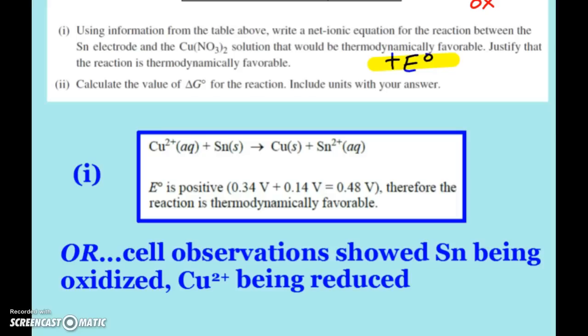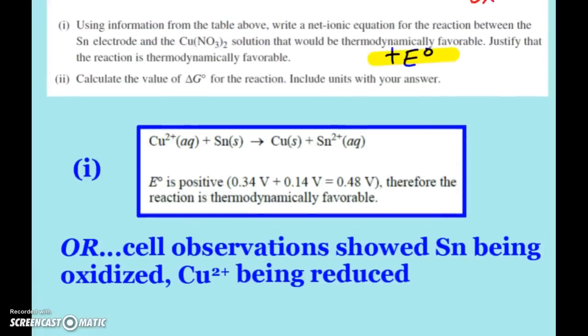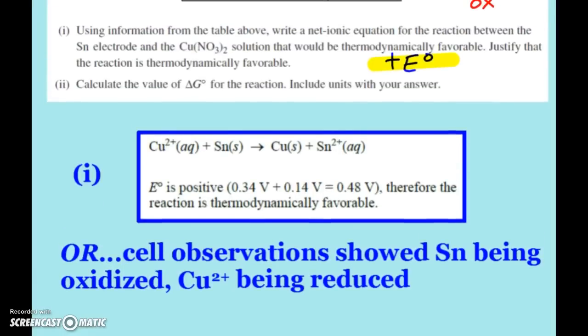So therefore the reaction is thermodynamically favorable. Or like I said, you can reference the cell observations from previous, from the beginning part that showed that tin is in fact being oxidized and copper is being reduced when that cell was hooked up that was obviously thermodynamically favored. Oh, sorry, the question's up here. The second part, the last thing here, calculate the value of delta G naught for the reaction and to include units.